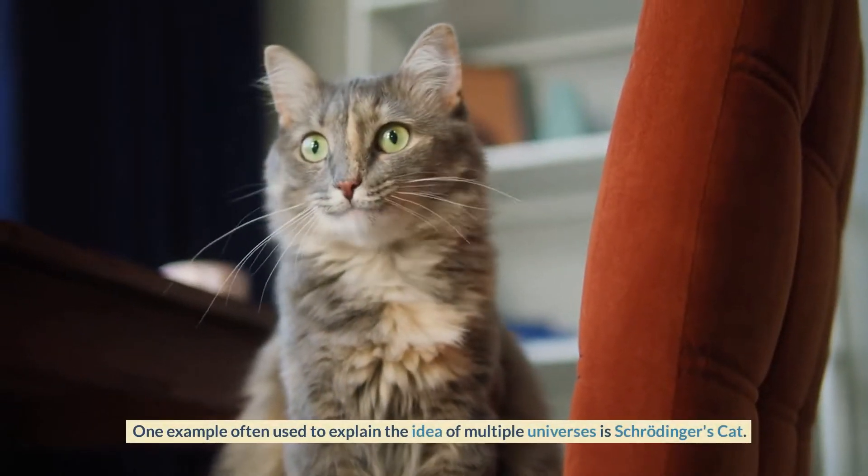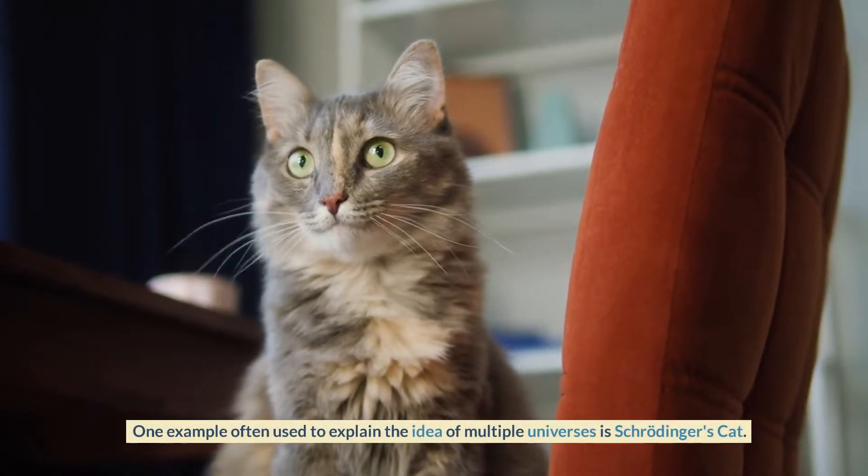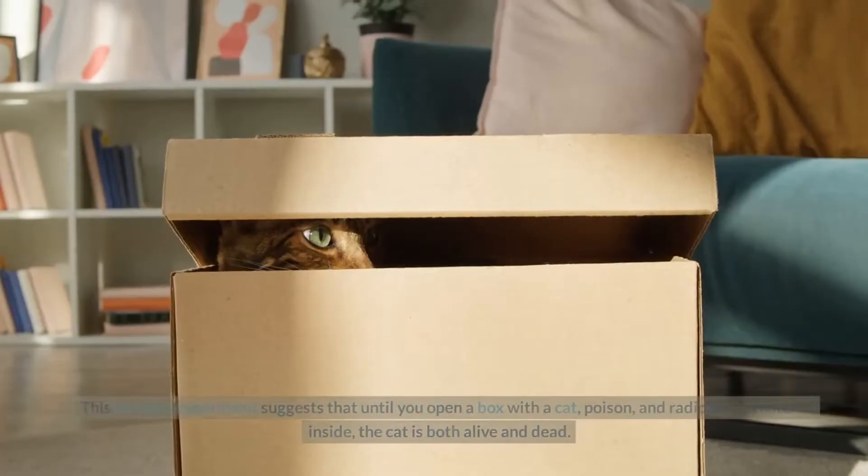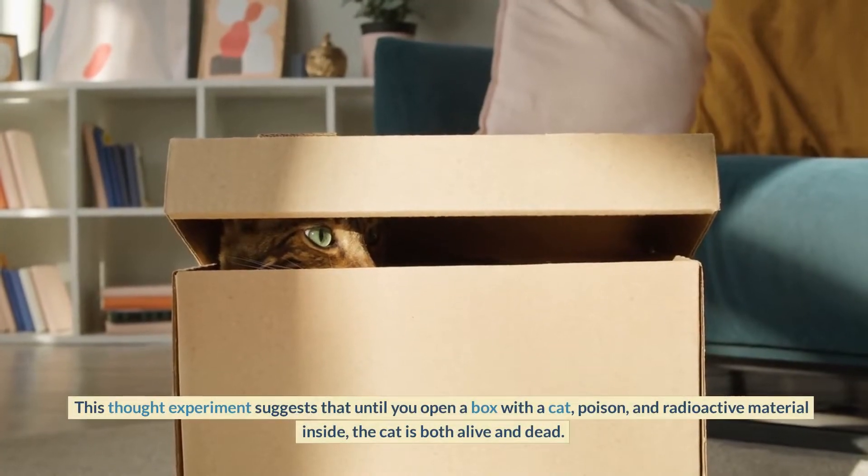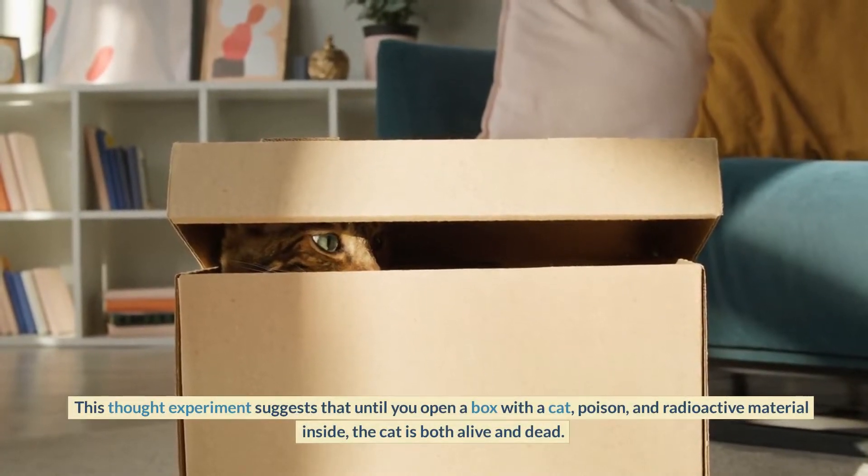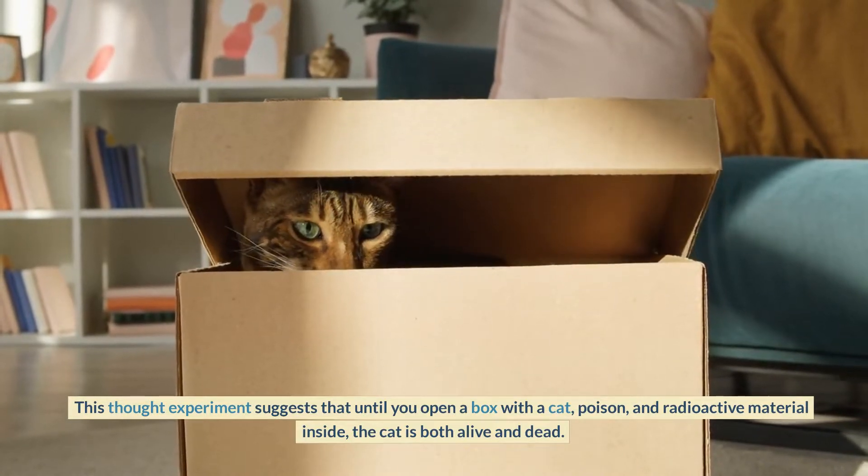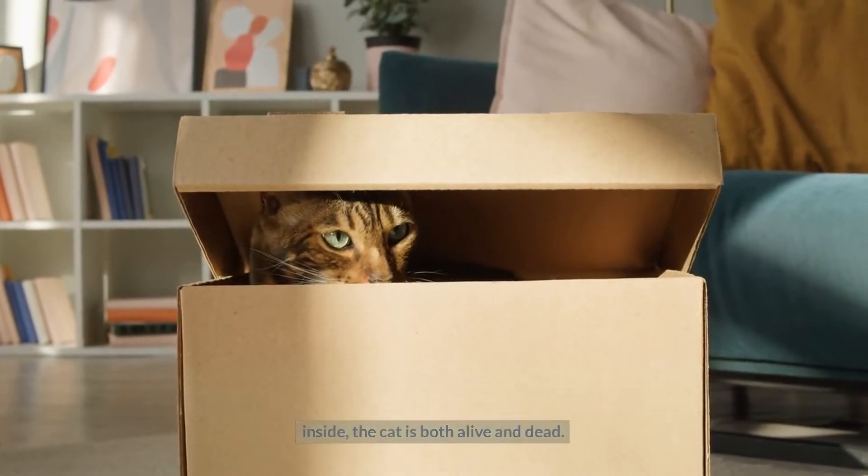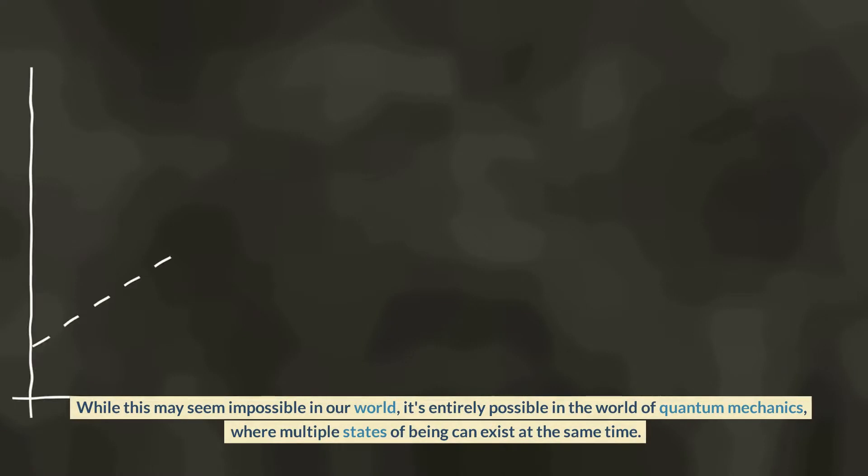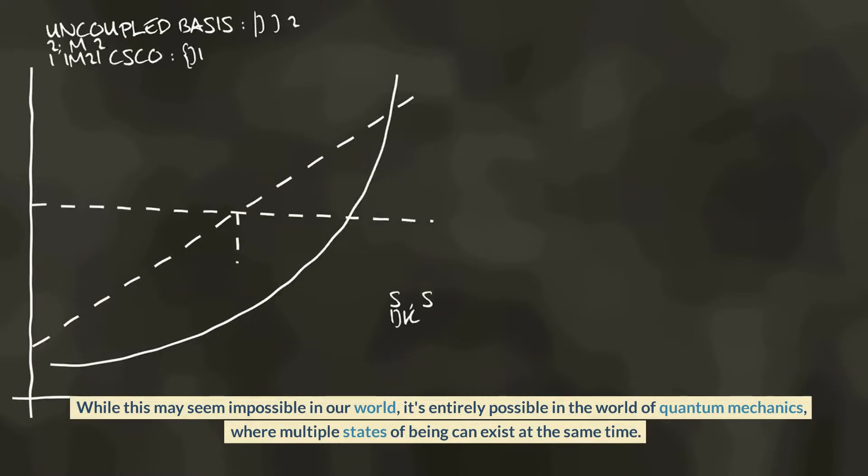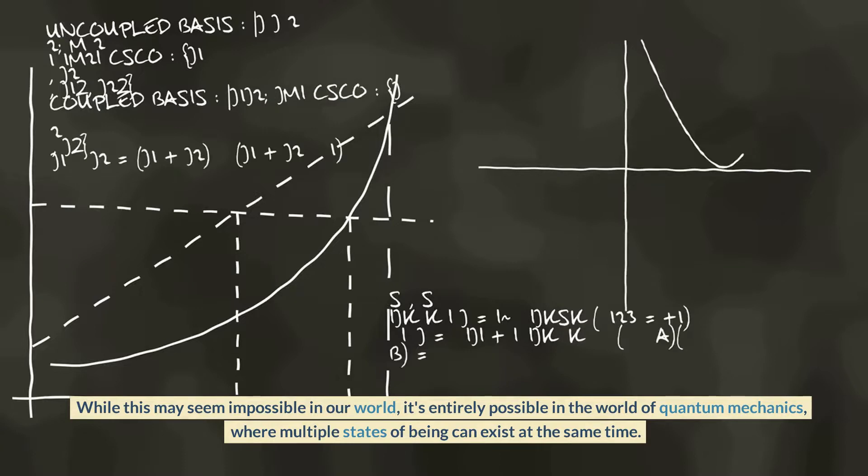One example often used to explain the idea of multiple universes is Schrödinger's Cat. This thought experiment suggests that until you open a box with a cat, poison, and radioactive material inside, the cat is both alive and dead. While this may seem impossible in our world, it's entirely possible in the world of quantum mechanics, where multiple states of being can exist at the same time.